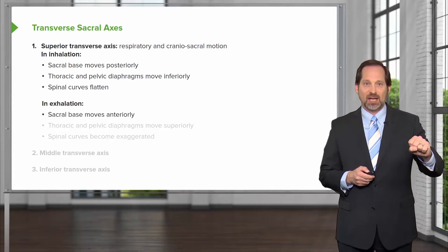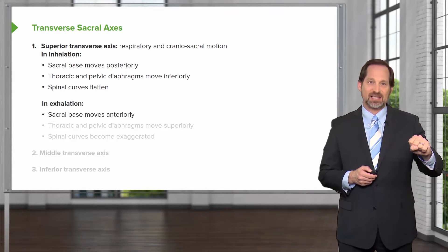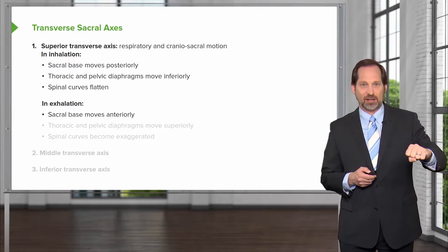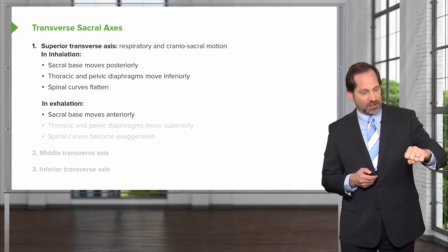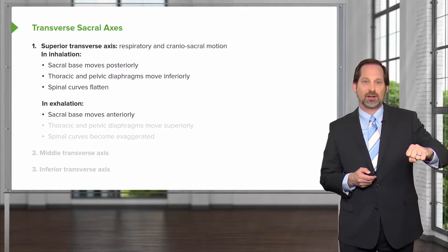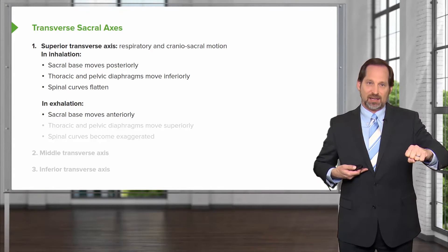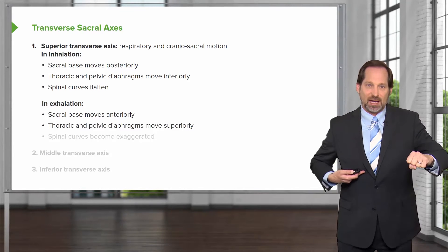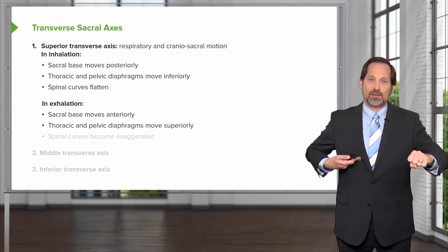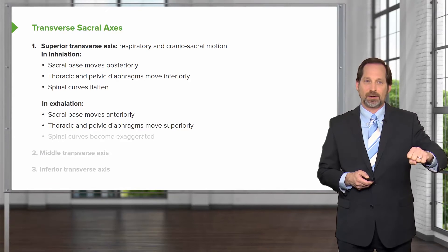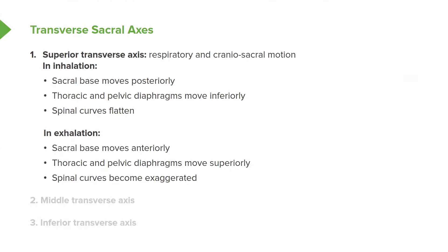In exhalation, you're going to see the sacral base move anteriorly, the coccyx come up, and the infralateral angle increase. The thoracic and pelvic diaphragm move superiorly, and the spinal curve — the lumbar lordosis — becomes exaggerated.